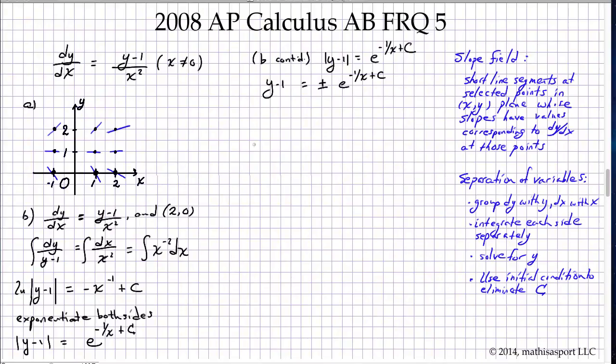And so we do something that's just become conventional. We use the laws of exponents to rewrite this as plus or minus e to the c times e to the negative 1 over x. And in that way, there's only one spot in the whole equation where we have things whose ambiguity can be determined by applying the initial condition.